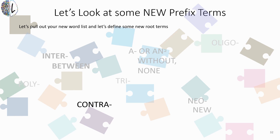Next up we have 'contra' — C-O-N-T-R-A. Can you find what that means on the word list? This one means against — so to be against, or almost like an opposite.